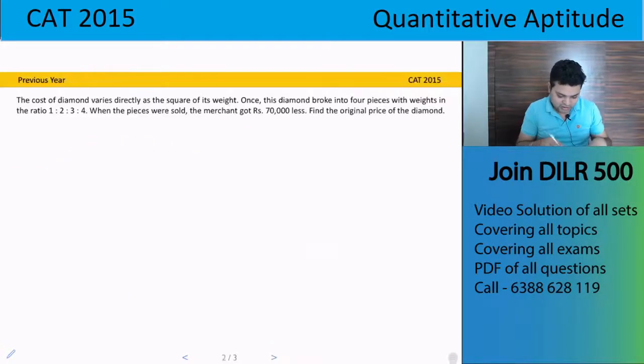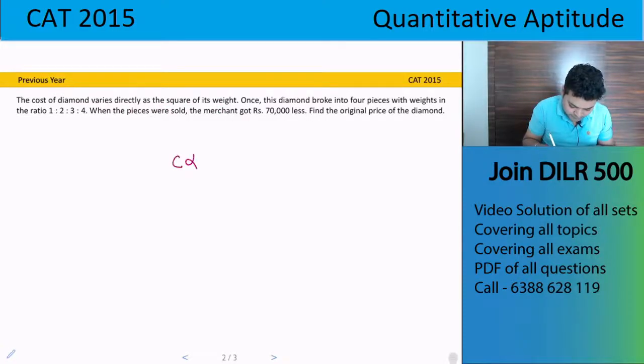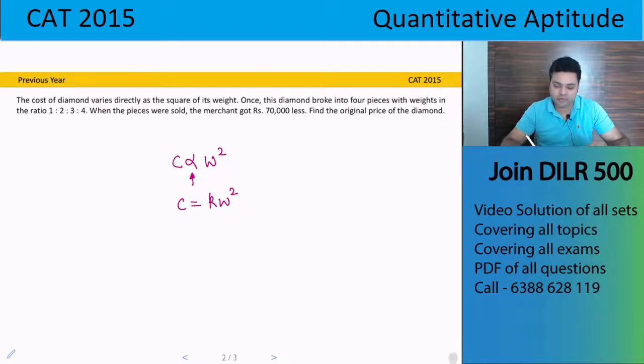So let's see this question. The cost of a diamond varies directly as the square of its weight. So this cost is the weight square. Directly varies with weight square. This proportional sign, this varies sign, we will introduce a constant. So C equals to KW squared.